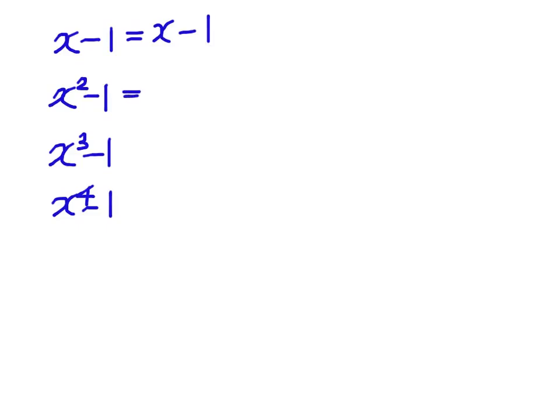And for x squared minus 1, this will be the form of difference of two squares and we have x minus 1 multiplied by x plus 1.